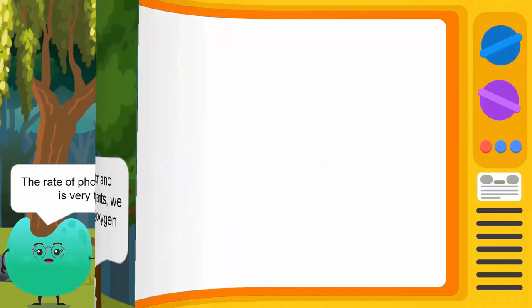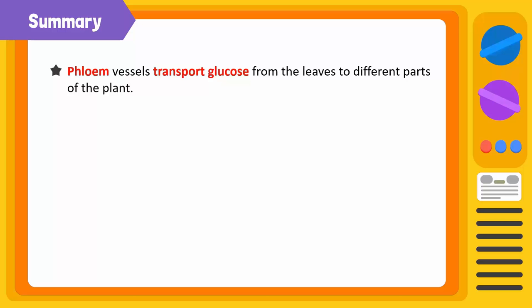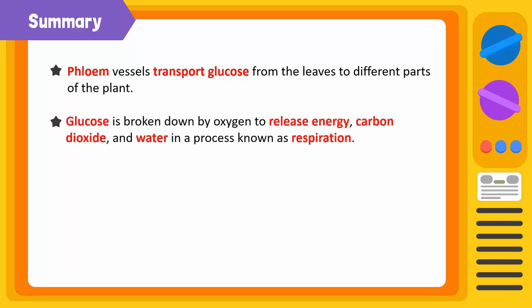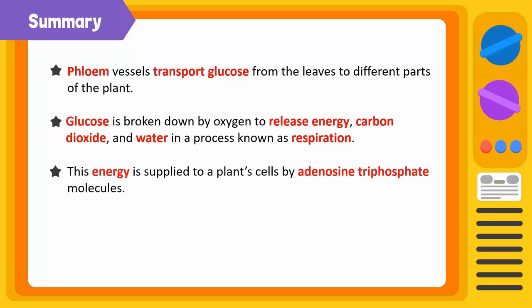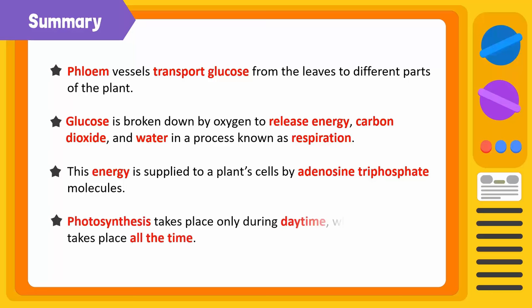Let's now summarize what we've learned. Phloem vessels transport glucose from the leaves to different parts of the plant. Glucose is broken down by oxygen to release energy, carbon dioxide, and water in a process known as respiration. This energy is supplied to a plant's cells by adenosine triphosphate molecules. Photosynthesis takes place only during daytime, while respiration takes place all the time.